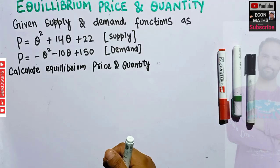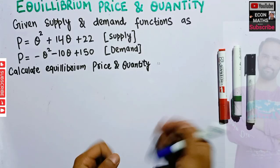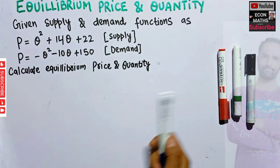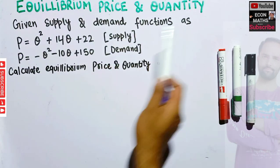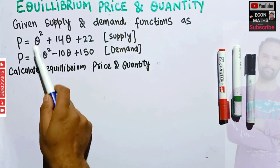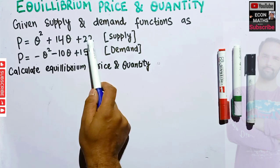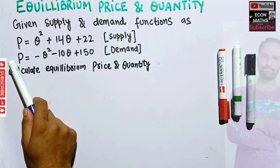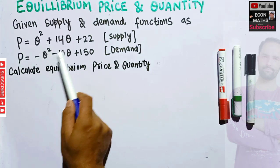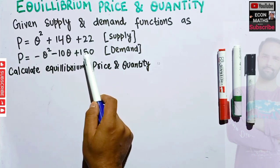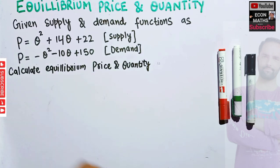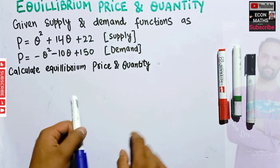In this video we will solve a problem asked by brother Faisal Khan on the Telegram channel of Econ Maths. The question gives supply and demand functions: the supply function is P = Q² + 10Q + 22, and the demand function is P = -Q² - 10Q + 150. Q denotes output and P denotes price. We have to calculate the equilibrium price and quantity.